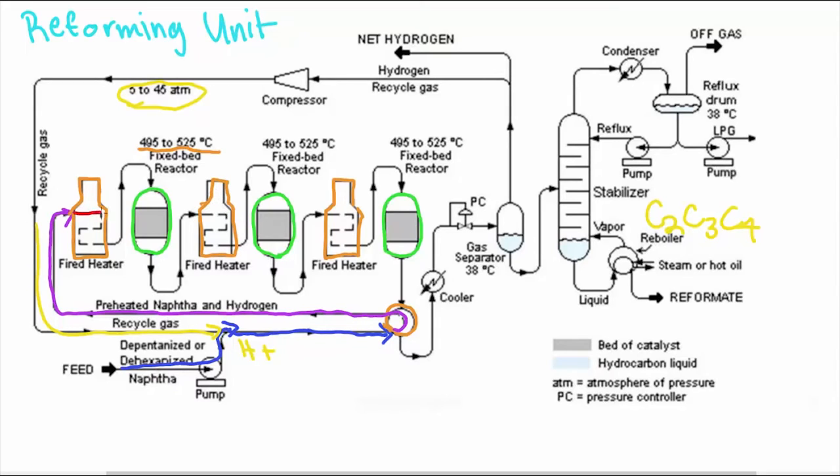The vaporized reactants flow through the first fixed bed reactor, which is where the majority of the reaction takes place, where hydrogen bonds are removed from the NAFTA forming aromatics. This causes the temperature to drop and the reaction to stop.